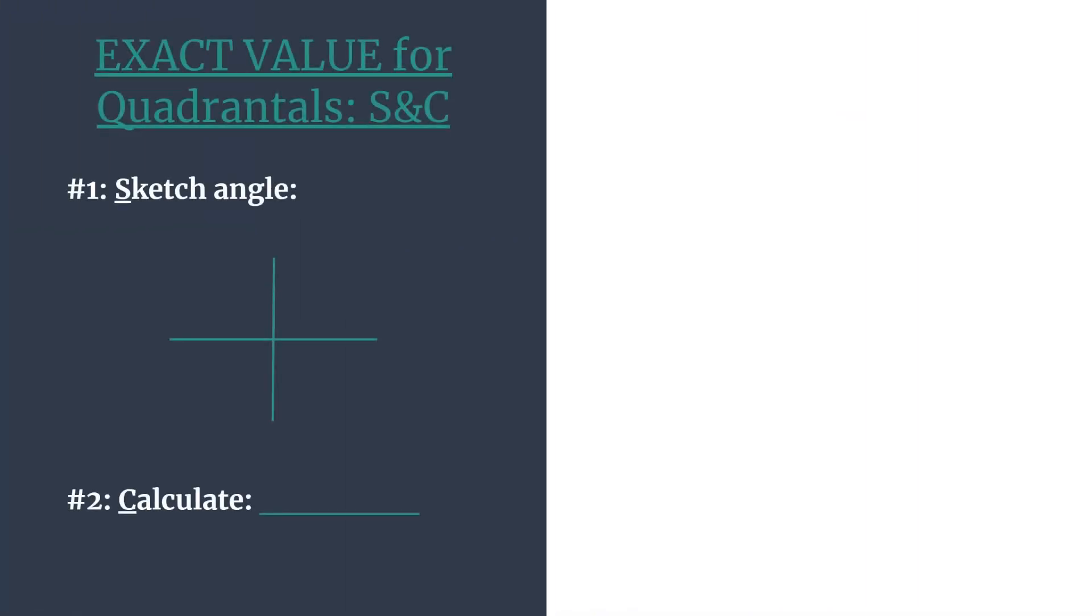Let's see what this looks like. First we're going to sketch the angle, so we'll sketch its terminal side. Then we'll find the coordinates and calculate whatever trig ratio we are looking for. Remember in this case we want to look at tangent of 3 pi over 2.